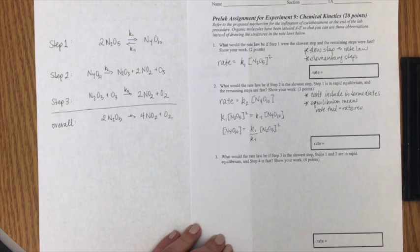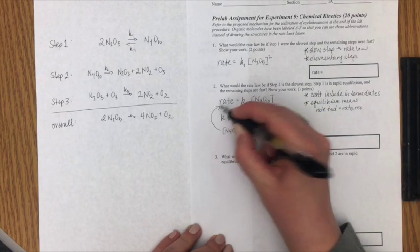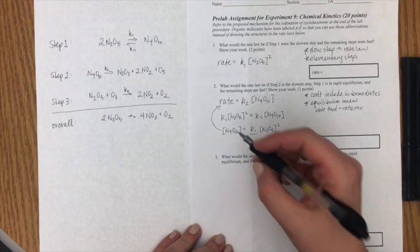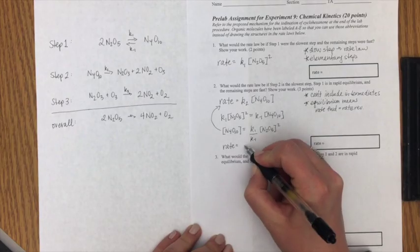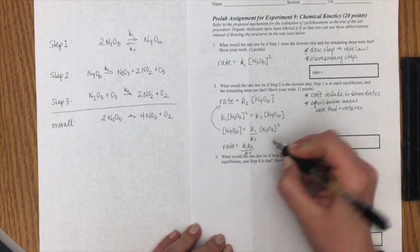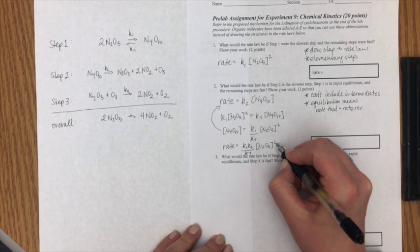Now I've solved for N4O10 and I can substitute that expression into my rate law. So doing that I get rate equals K1 K2 over K-1 times N2O5 squared.